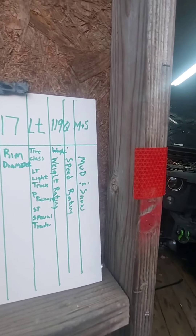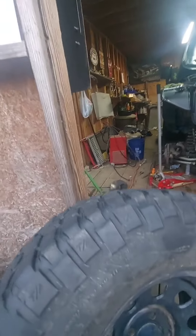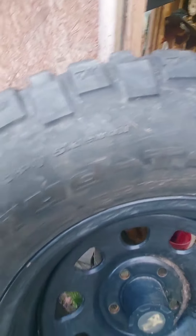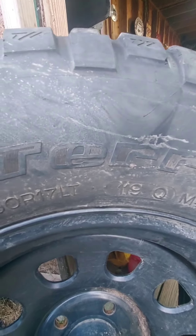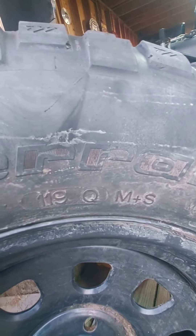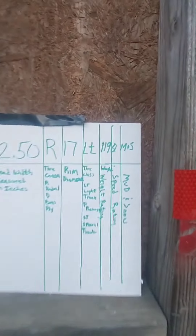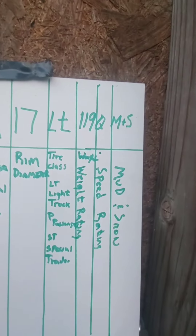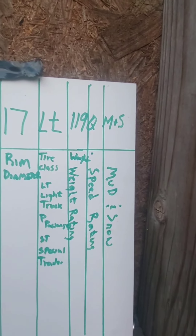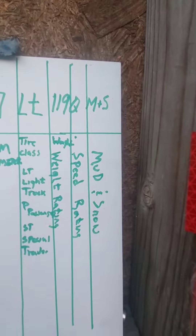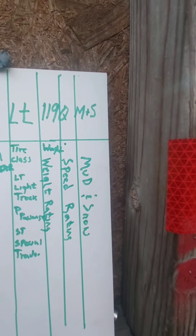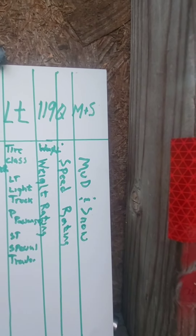Looking at this tire, you'll see the full marking reads 35 1250 R17 LT 119 Q M&S. The 119 is your weight rating. Q is your speed rating. And M&S — or M plus S — simply stands for mud and snow.